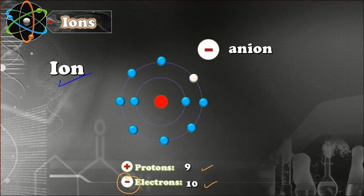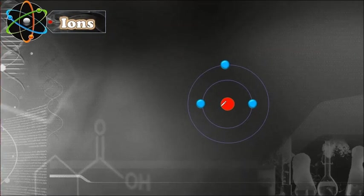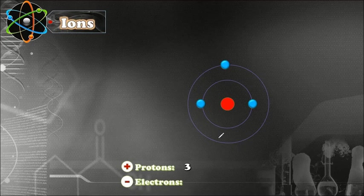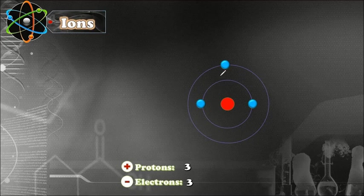Now if we look at this atom of lithium, it has three protons and three electrons. This atom wants to have a full shell because the outer shell needs to have eight electrons. So it can either gain seven electrons or lose one electron, which is much easier.